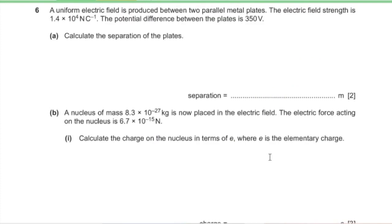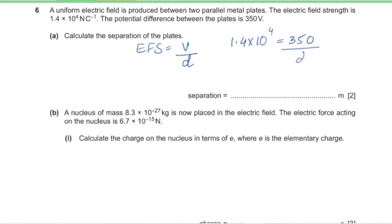Question 6: a uniform electric field is produced between two parallel metal plates. The electric field strength is 1.4 × 10⁴ N/C and the potential difference between the plates is 350 V. Part A: calculate the separation of the plates. Using E = V/d: 1.4 × 10⁴ = 350/d, so d = 0.025 meters.